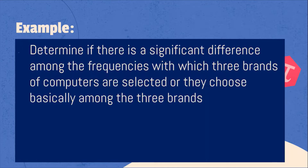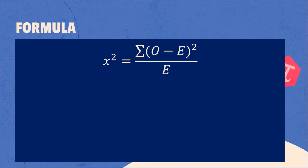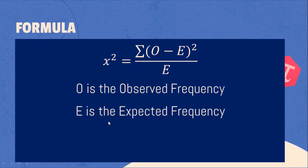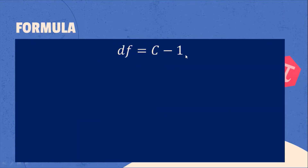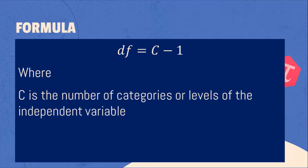What is the formula for chi-square? Chi-square is equal to the summation of the square of the difference of O minus E, over E, where O is the observed frequency and E is the expected frequency. We also have degree of freedom equal to C minus 1, where C is the number of categories or levels of the independent variable.